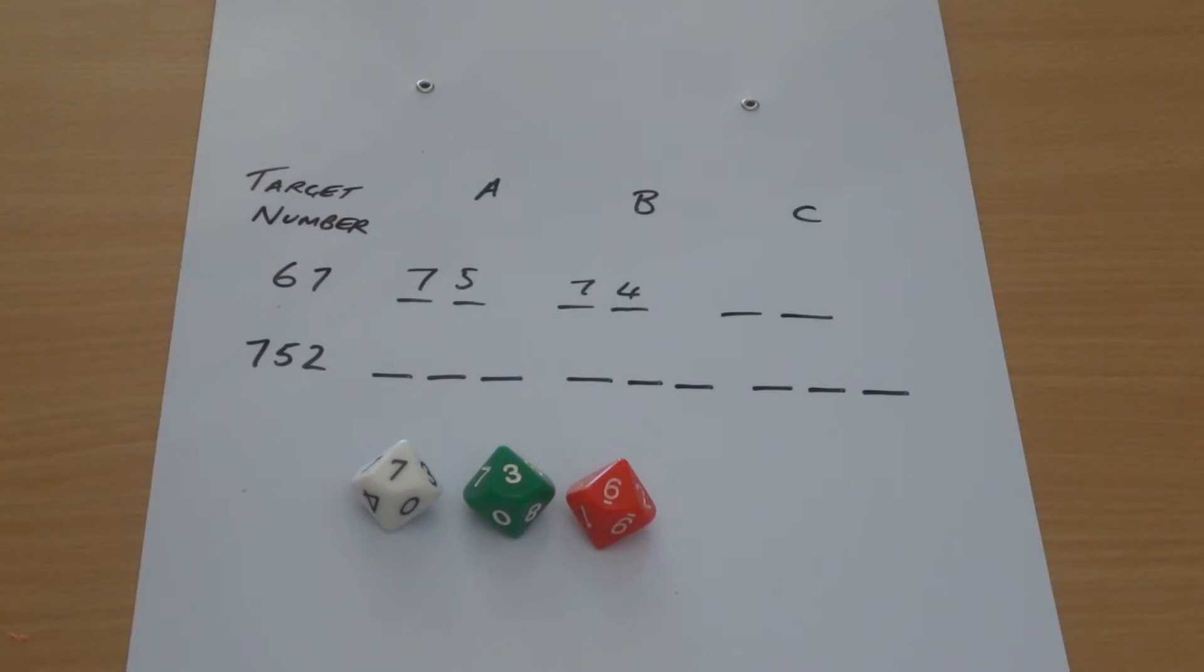We've looked at the first version of Numerate with just two-digit numbers, but now we could go with three-digit numbers. In this case you have to use all three dice in order to create a number that is as close to 752 as you can.